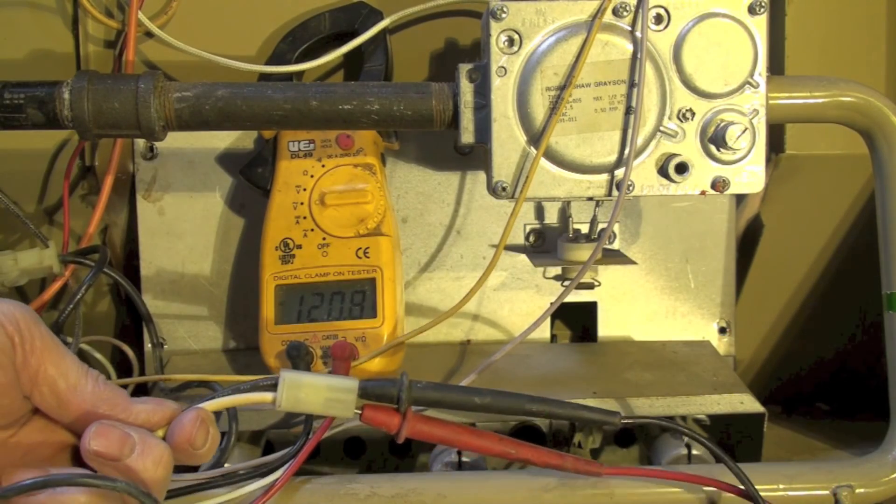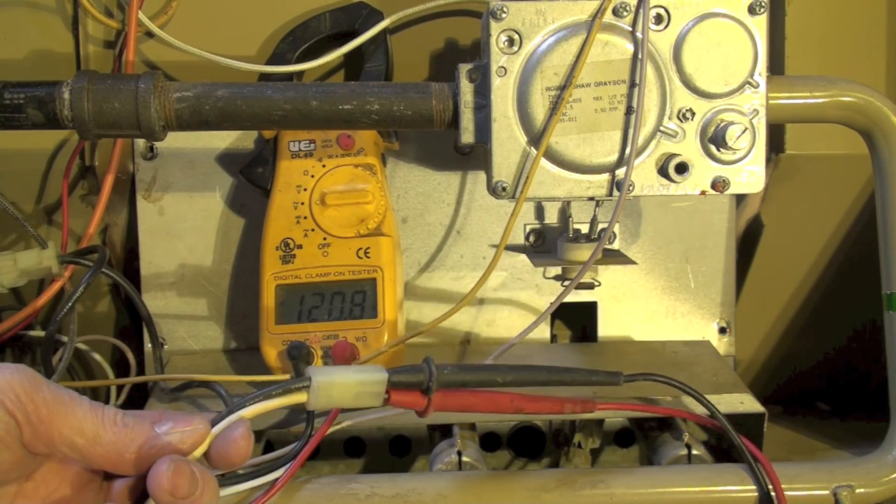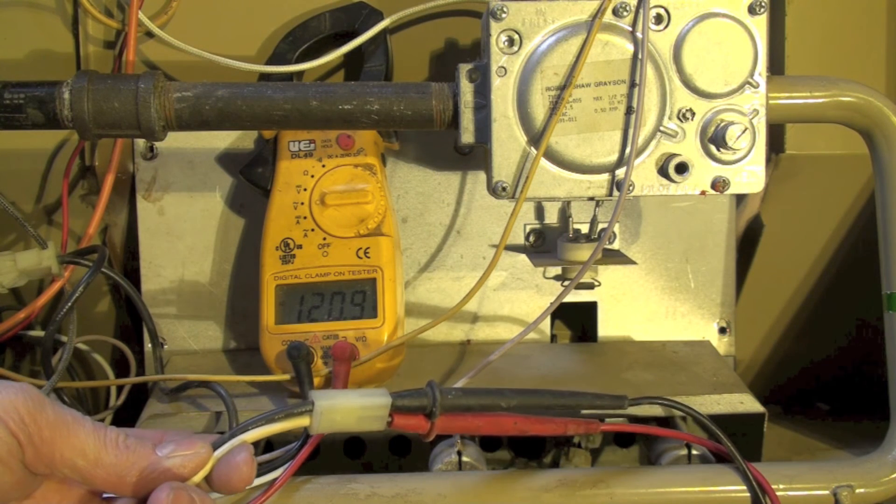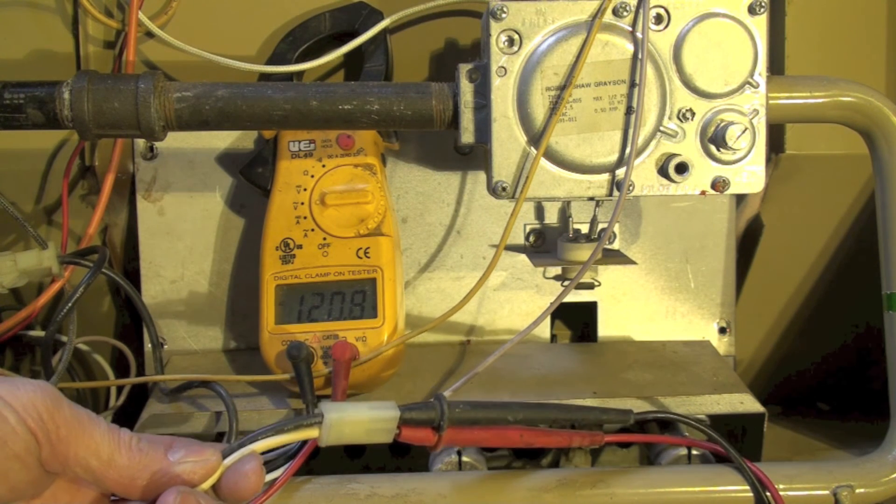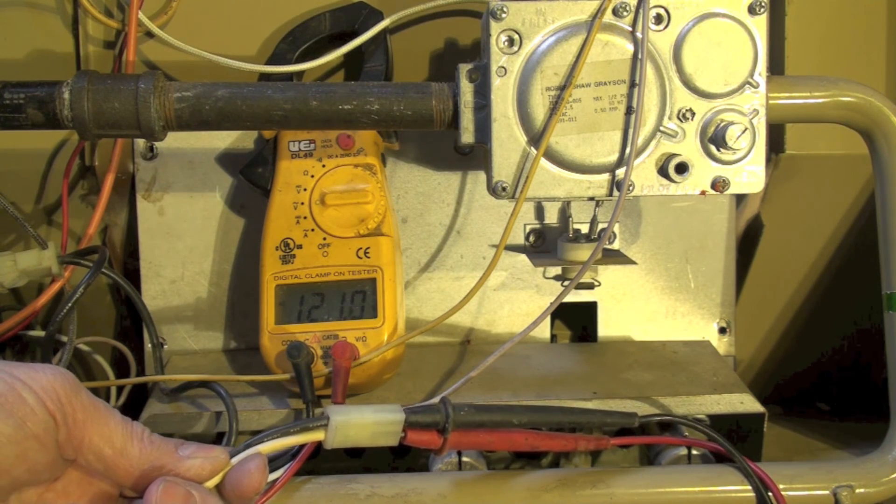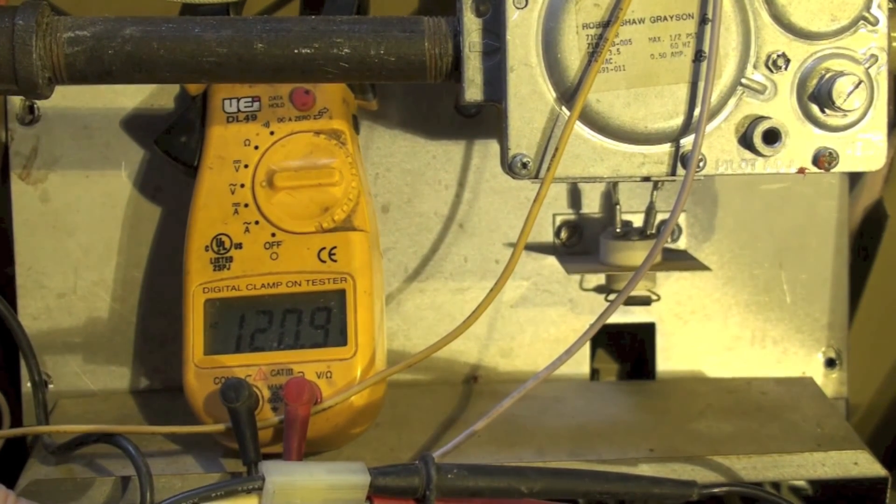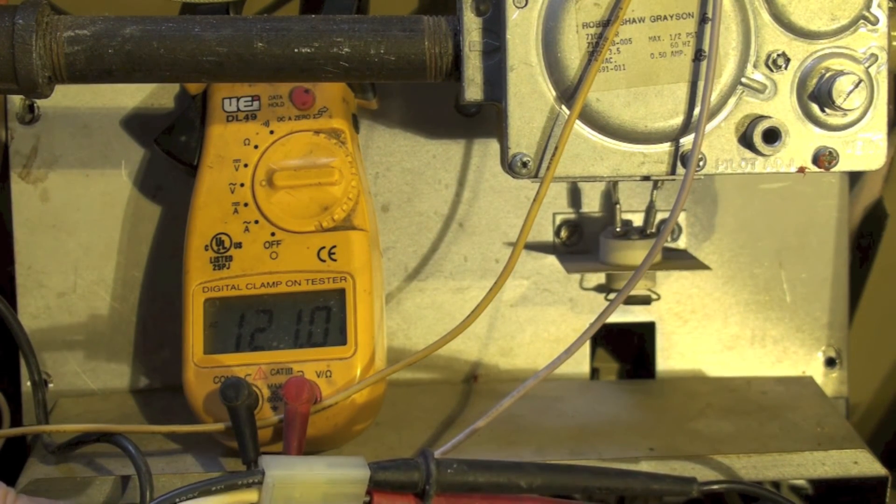Now here you can see I've set my probes onto the wire coming from the ignition control to the hot surface igniter and I'm showing 120 volts. So I got power going to the hot surface igniter, but the hot surface igniter is not coming on.